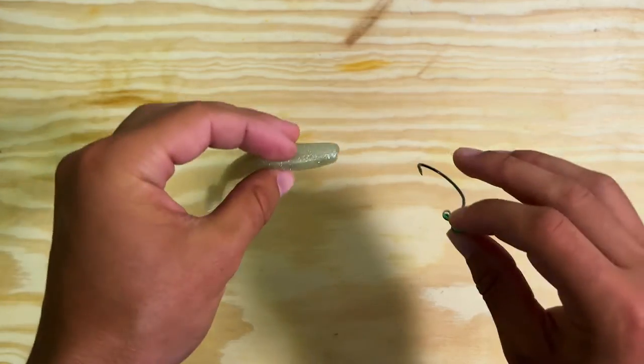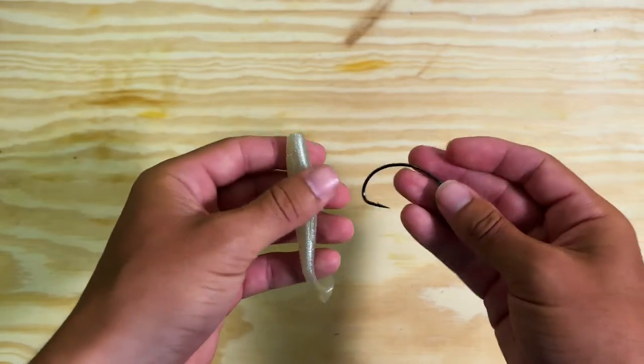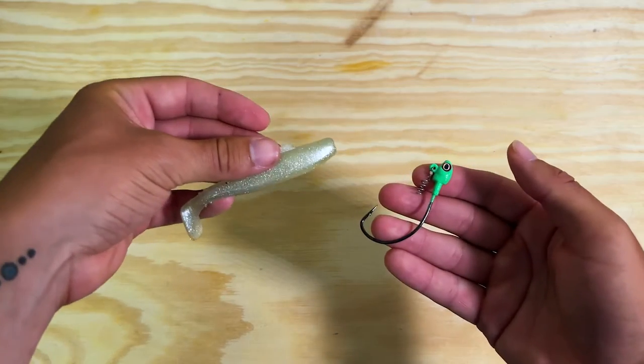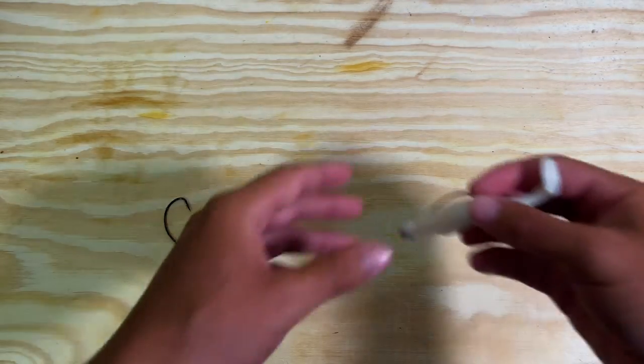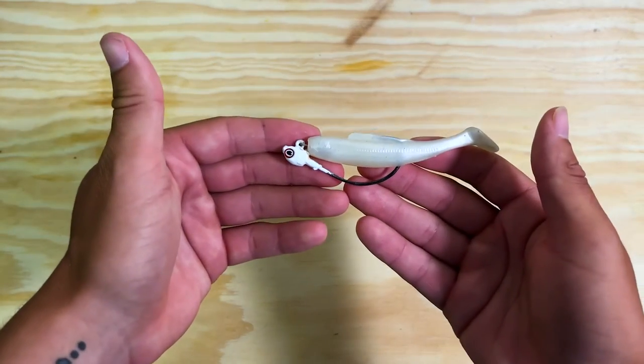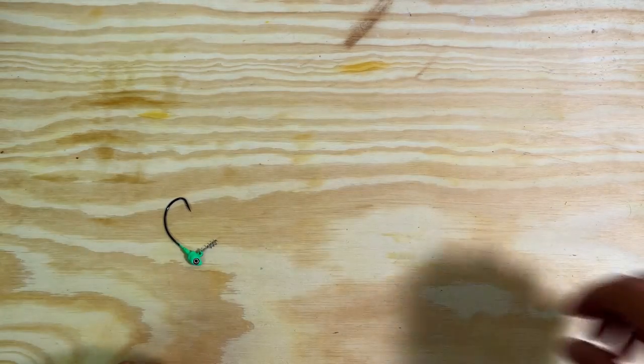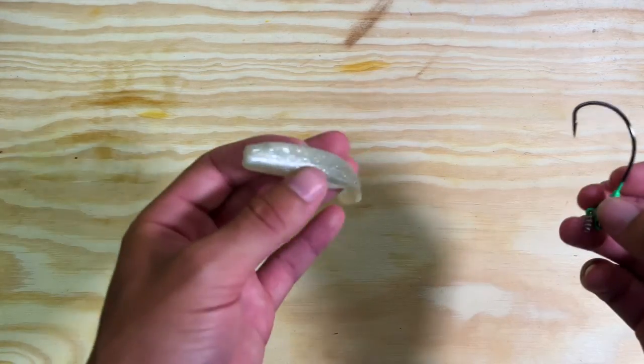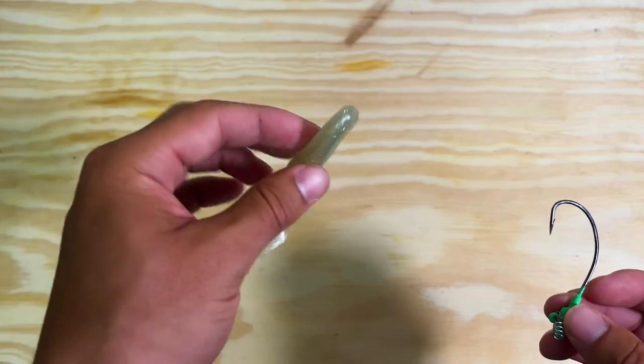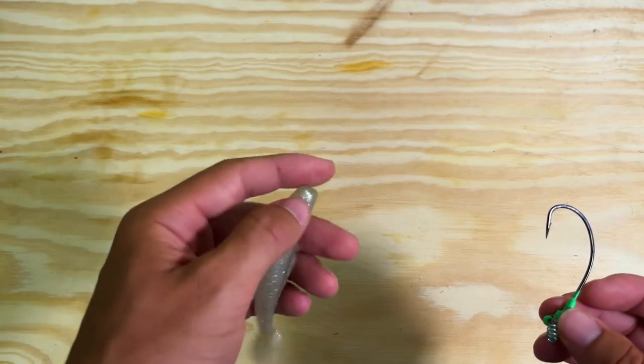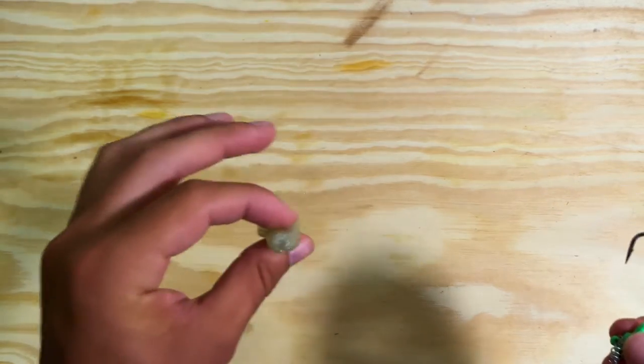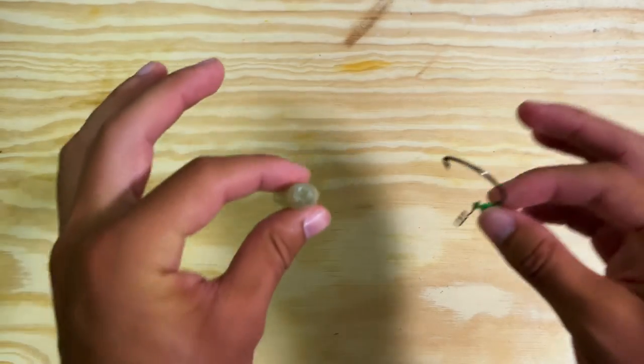They work great and we're going to get into how to turn this into this. So super simple. Does not have to be a paddle tail. It can be a jerk shad if you want. It can be a craw, whatever Z-Man plastic this trick works for.